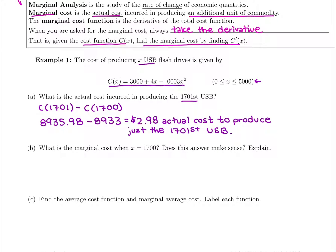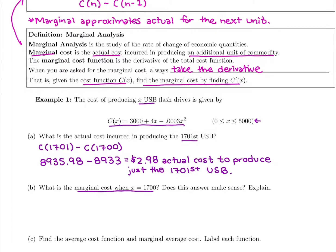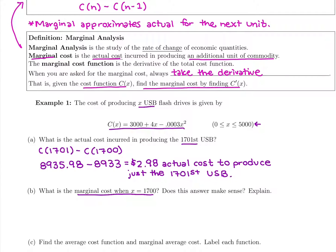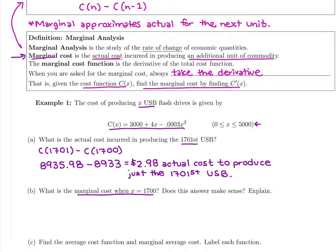The next part says to compare this to the marginal cost when X is 1,700. Marginal cost is used to predict the actual cost of producing one additional unit. We want to see if this approximation works — marginal is supposed to approximate actual for the next unit. Let's see if it actually does.